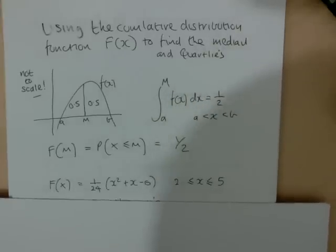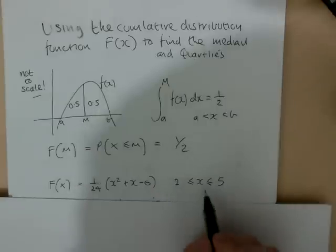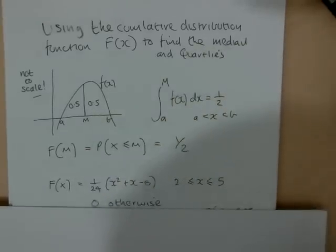So suppose we're given the cumulative distribution function as 1/24 times (x² + x - 6), and we're told that x exists between 2 and 5, 0 otherwise.